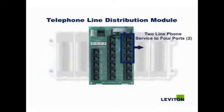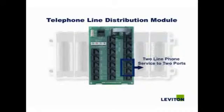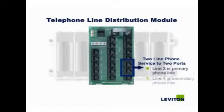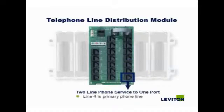Two-line service to four ports: line 2 is the primary phone line, and line 1, line 4, or line 3 is the secondary phone line, respectively. Two-line phone service to two ports: line 3 is the primary phone line and line 4 is the secondary phone line. Two-line service to one port: line 4 is the primary phone line and line 1 is the secondary phone line.